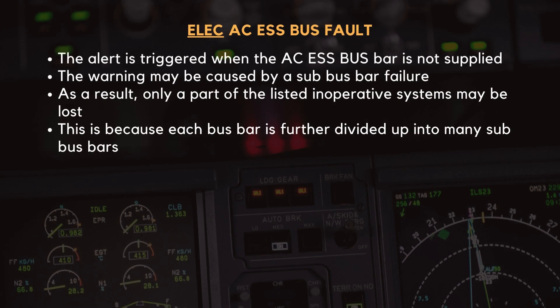The alert is triggered when the AC essential bus bar is not supplied. A point to note: the warning may be caused by a sub-bus bar failure. As a result, only a part of the listed inoperative systems may be lost, because each bus bar is further divided up into many sub-bus bars.